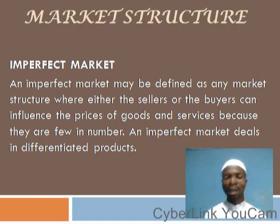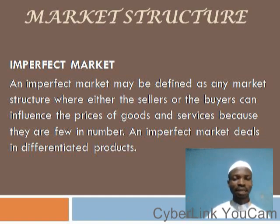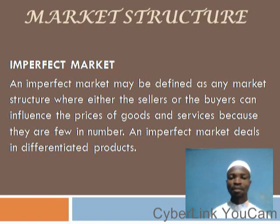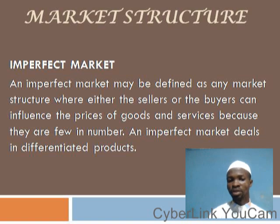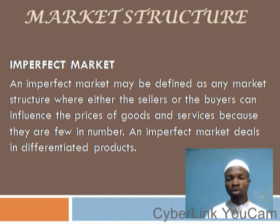A market is described as an imperfect market if all the characteristics of a perfect market are missing, or if at least one of those characteristics is missing. So if you have a market where there is no perfect information about the operation of the market, such a market is an imperfect market. Or if the goods and services bought and sold are not homogeneous — if heterogeneous products are traded — such a market is an imperfect market.